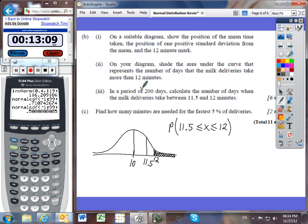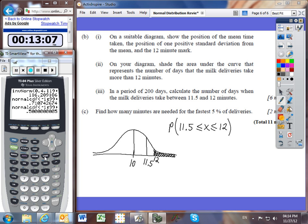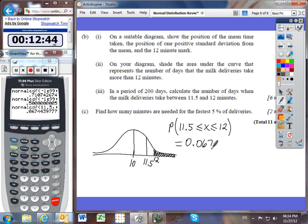Let's begin by doing a normal CDF. Second VARS normal CDF. My lower bound is 11.5 minutes. My upper bound is 12 minutes. My mean was 10, and my standard deviation is 1.5.